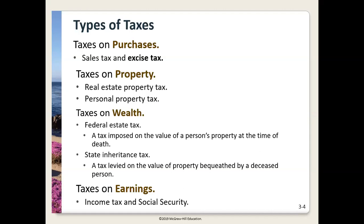The two main types of taxes on wealth are federal estate tax and state inheritance tax. When somebody passes away, their property is considered their estate, and the federal government will tax the value of that property at the time of death. The money to pay those taxes comes out of the group of assets they own. Right now, if the value of the property you own at death is less than about $12 million, you're exempt — meaning you don't pay any federal estate tax. It's really meant for wealthier individuals.